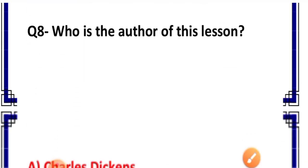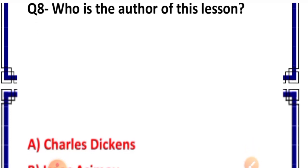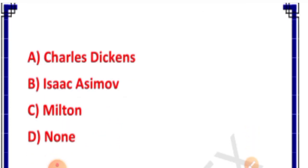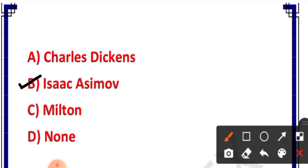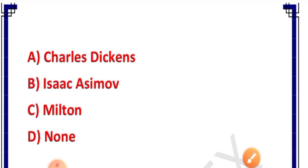Question number 8: Who is the author of this lesson? Options: A. Charles Dickens, B. Isaac Asimov, C. Milton, D. None. Correct answer is option B — Isaac Asimov.